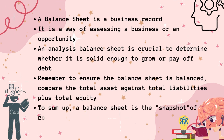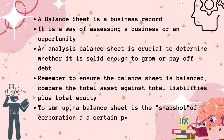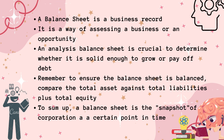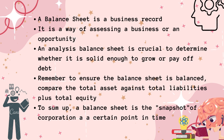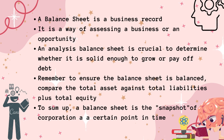Cash, accounts receivable, short-term investments, property, plant, and equipment, together with other significant liabilities, are considered by many experts to be the most crucial components of a balance sheet. To ensure the balance sheet is balanced, it is necessary to compare total assets against total liabilities plus equity. To sum up, a balance sheet is a snapshot of a corporation at a certain point in time. Three items make up the balance sheet: assets, liabilities, and owner's equity.